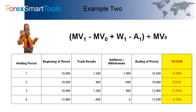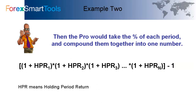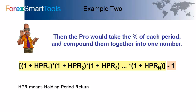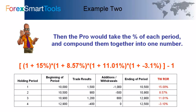If we do that for this example, we see on the far right the time-weighted rate of return for each period. Then, one more step: the pro would take that percentage for each period and compound it together with the other percents for each holding period into one aggregate number. This is the formula used — one plus the rate of return for the first holding period, multiplied by one plus the rate of return for the second holding period, and so on — then subtract one from the whole result.